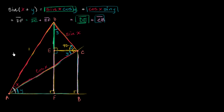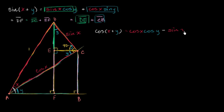In the last video, we proved the angle addition formula for sine. In this video, I would like to prove the angle addition formula for cosine — specifically that cosine of x plus y is equal to cosine of x times cosine of y, minus sine of x times sine of y. I'm going to use a very similar technique, and I encourage you to pause the video and see if you can do this proof on your own.